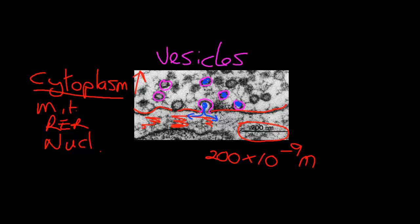These vesicles contain neurotransmitter, and they are pushing that neurotransmitter out. If you look at the very bottom here, you can see the next adjacent neuron cell membrane that the neurotransmitter is going to make contact with. Vesicles can transport the content of a cell outward, but they can also do the reverse — they are also the way a cell takes material from the outside and brings it inward. So a vesicle can be a two-way system.